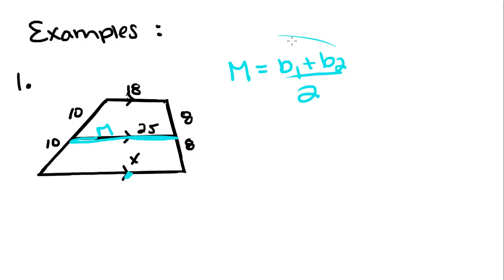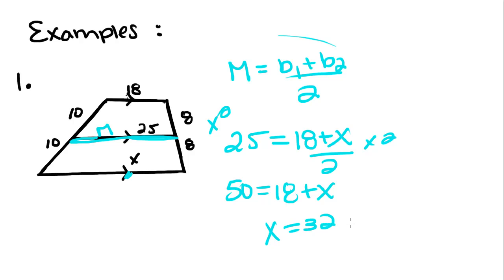So then we can plug it into this formula. So 25 is equal to 18 plus X, which is what we're trying to find, divided by two. When we solve for X, we have to multiply both sides by two. So we get 50 equals 18 plus X. So to solve for X, we subtract 18 over, and you get X is equal to 32.